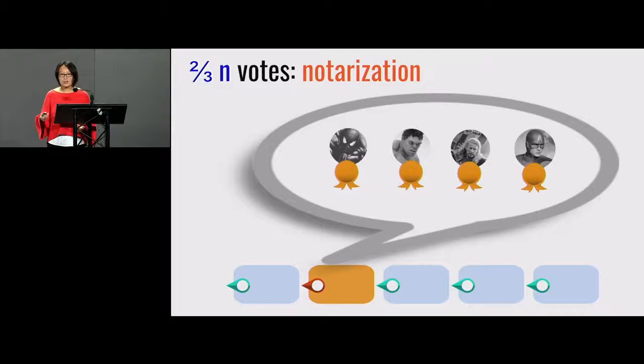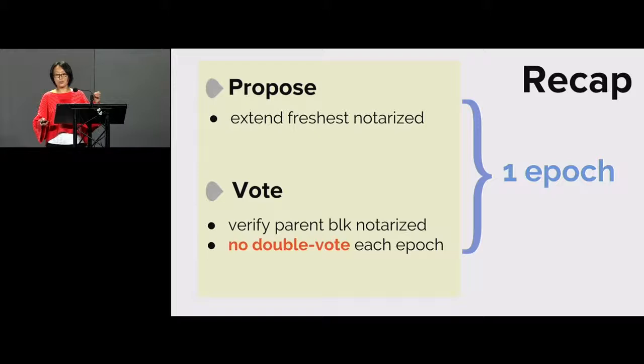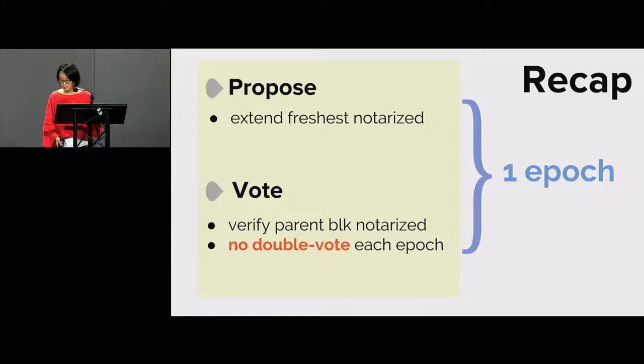When proposing, one detail I omitted: when I propose a block, I must choose which parent it extends from. Most naturally, I want to pick the freshest notarized block in my current view. When voting, there are conditions to check — no double voting. Also, if I receive a block whose parent hash I don't recognize and can't find a matching prefix, the proposed block might be corrupt. I won't vote for any block unless I've seen the parent block and a notarization for the parent block.